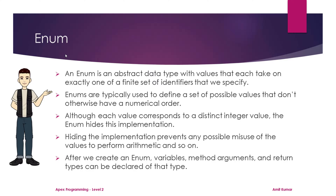In languages like Java, Enum values have distinct integer values, but in Apex, Enum hides this implementation. This is helpful because hiding the implementation prevents the use of Enum in any arithmetic calculation. As Enum is an abstract data type, we can use it like any other data type — creating variables, passing as method arguments, and returning as return types.